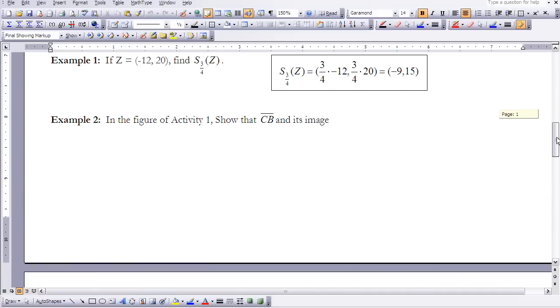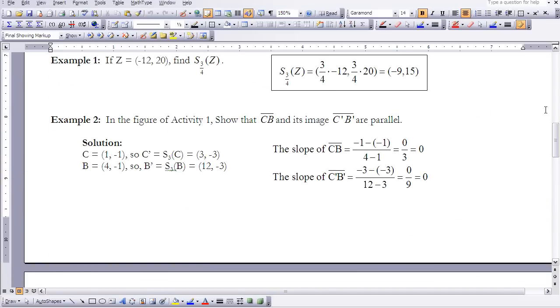So the next piece of this is we want to look at how our image and our pre-image segments are parallel to each other. So if you take a look at your sailboat, CB and C prime, B prime, they appear to be parallel. And we know that parallel lines have the same slope. So what I need to do is take the coordinates that I have for C, remember, or as you look at your drawing, 1, negative 1 for C. C prime was 3, negative 3. And for B, it was 4, negative 1, and B prime was 12, negative 3.